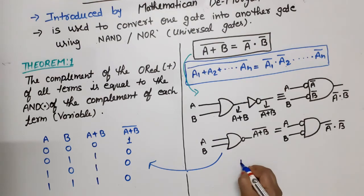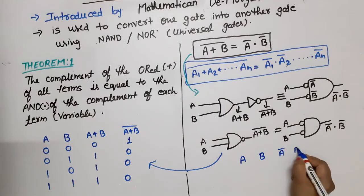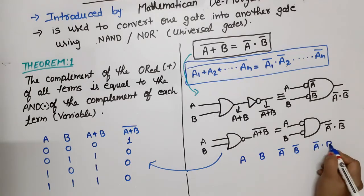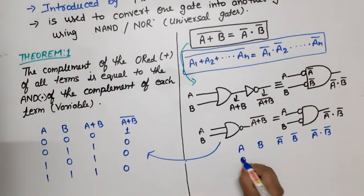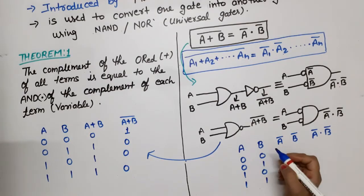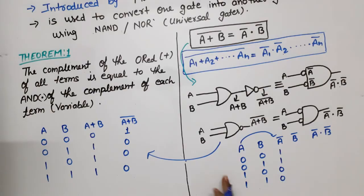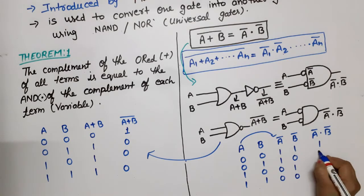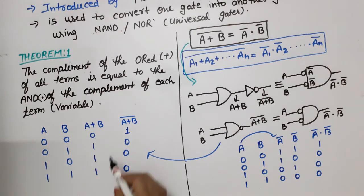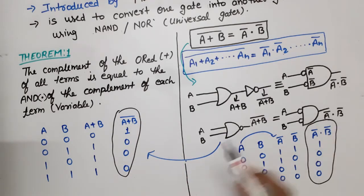For the right-hand side, we need A bar and B bar. The complement of A gives 1, 1, 0, 0 and the complement of B gives 1, 0, 1, 0. The product A bar dot B bar gives: 1 dot 1 = 1, 1 dot 0 = 0, 0 dot 1 = 0, 0 dot 0 = 0. Comparing both truth table columns, the values are equal — confirming Theorem 1 is verified.